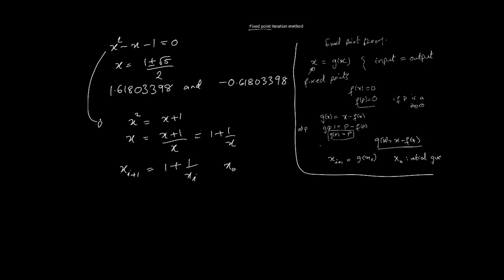You can start with any initial guess, for instance x_0 equals 1. Then x_1 would be 1 plus 1, so it equals 2. x_2 would be 1 plus 1 over 2, so 1.5. Similarly, x_3 will be 1 plus 1 over 1.5, which equals 1.666 recurring. As we continue, it will actually converge to the solution. It's already getting close to 1.618, and it will converge quite quickly to this root.